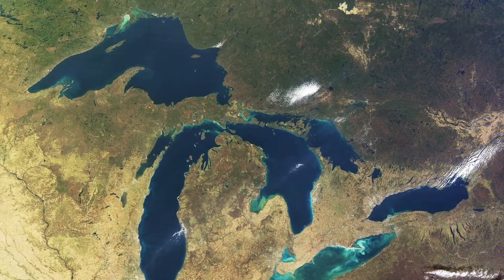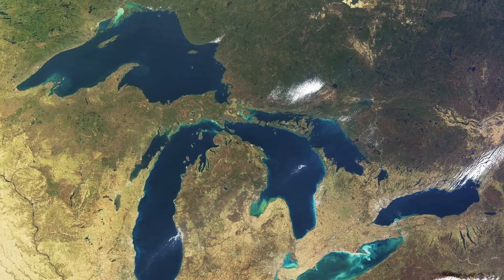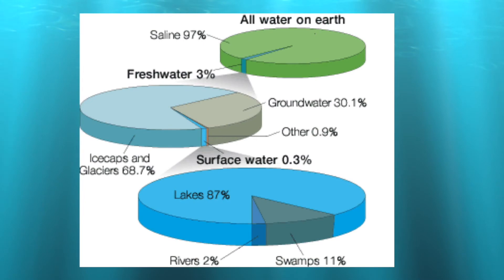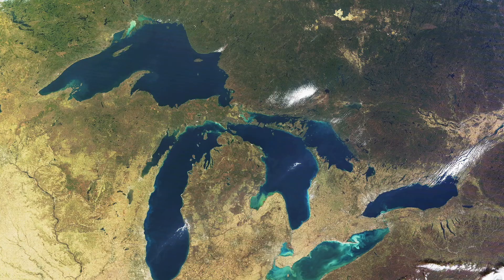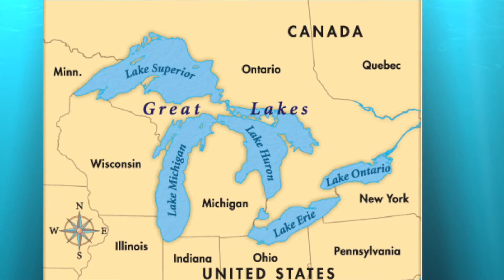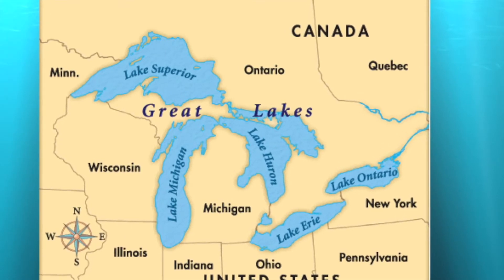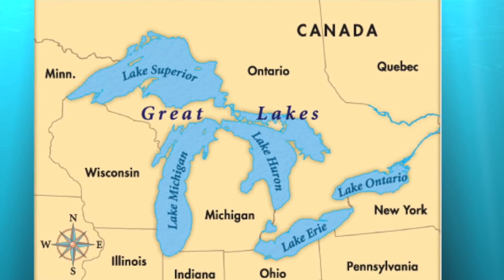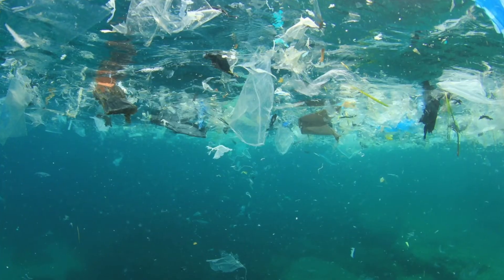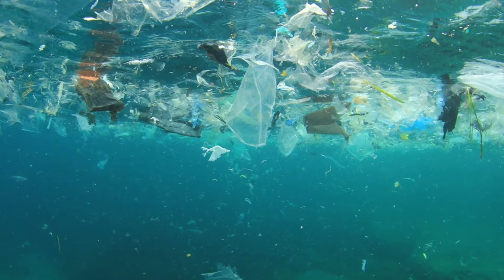Plastics are becoming increasingly more prominent in freshwater inland lakes and river ecosystems, one of these being the Great Lakes. Out of all the water on Earth, less than 3% is freshwater available for drinking, and 80% of that is frozen in ice caps and glaciers. Michigan's Great Lakes hold about 20% of the world's available freshwater supply and about 90% of the United States' total freshwater. 40 million residents of the United States and Canada depend on this ecosystem for clean drinking water. If microplastics continue to endanger this resource, it would clearly be detrimental to these massive populations of people and wildlife.